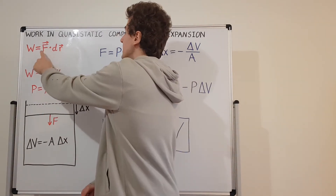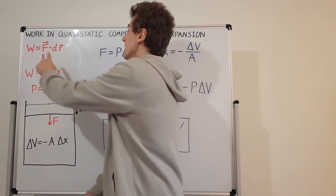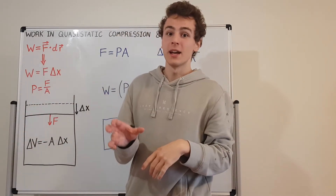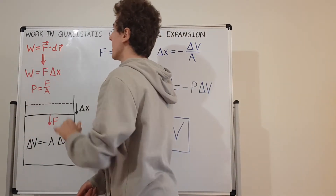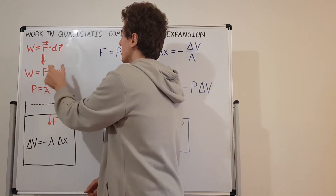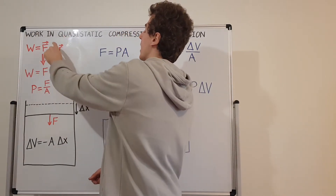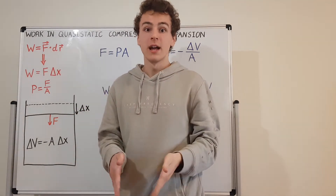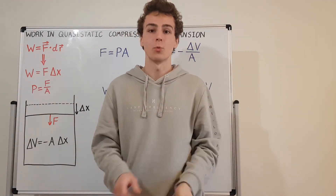The units of force are newtons and the units of displacement are meters in SI units, giving us newton meters. Newton meters are the same as joules, which are the SI unit for energy. So work is a form of energy — force times displacement gives us work. Since these vectors are parallel, we can just take their magnitudes and multiply them to get the work.